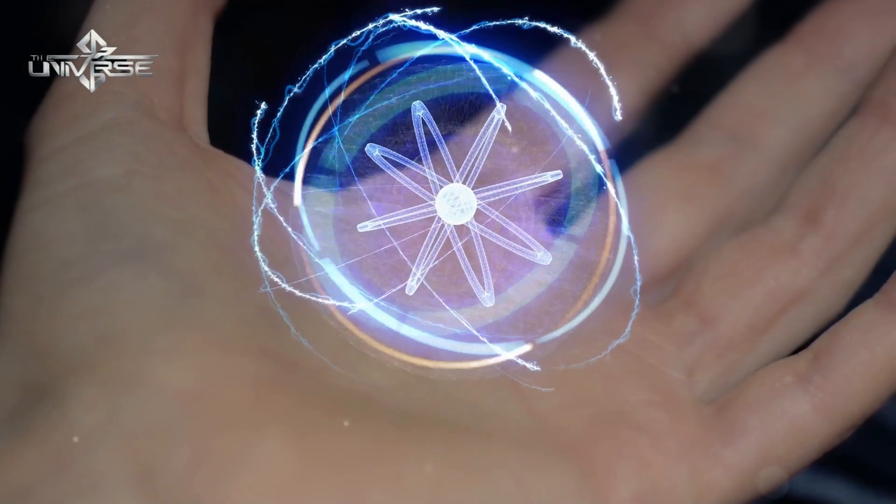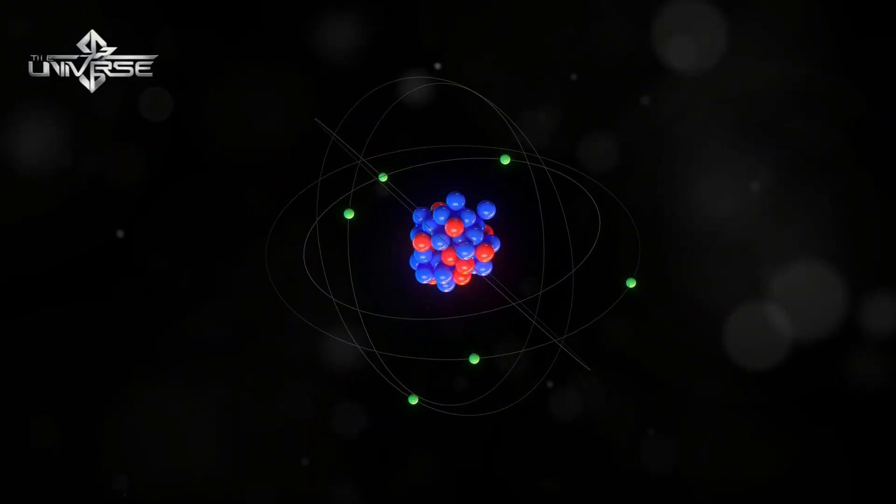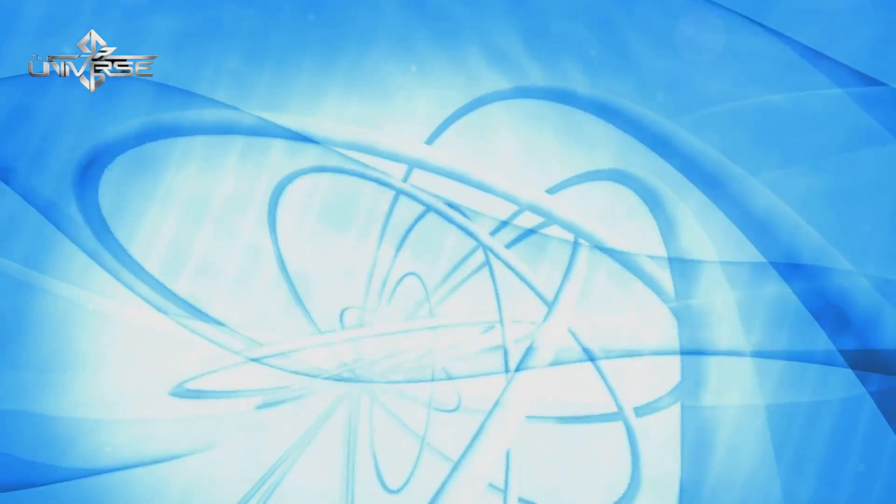To understand this, we need to first peek inside an atom. Picture an atom as a tiny solar system. At its center is the nucleus, made up of protons and neutrons.